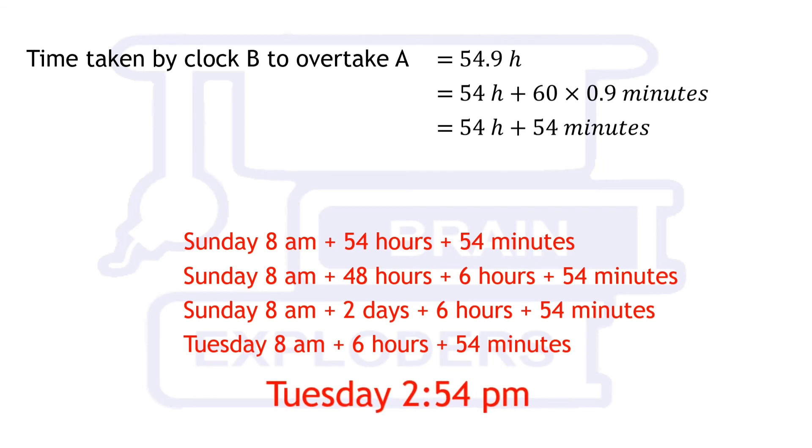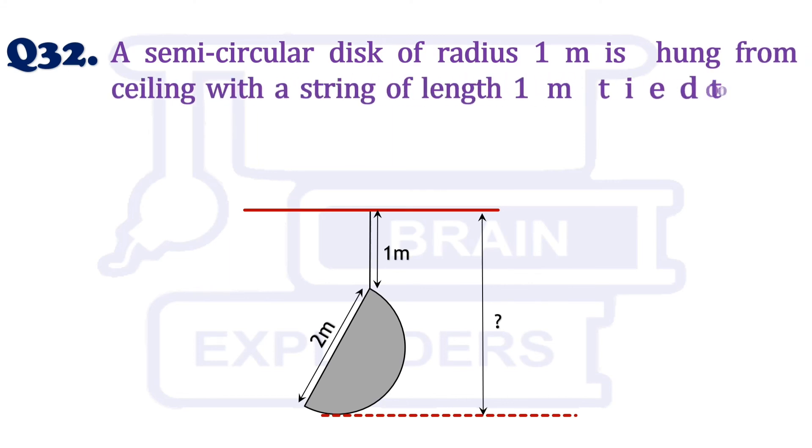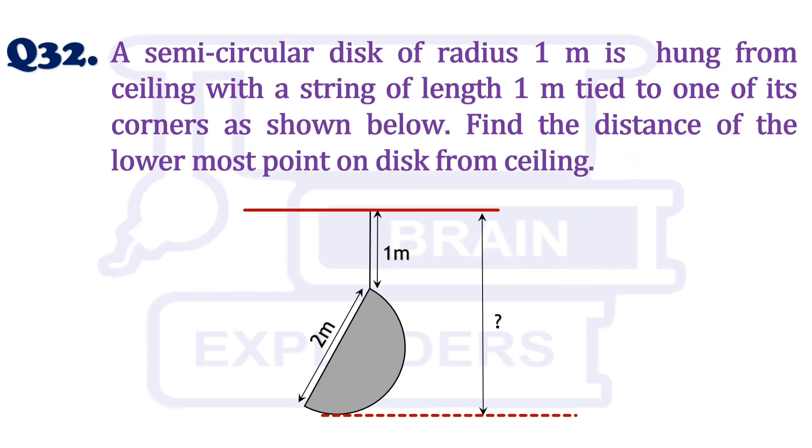Let's move to our next question. A semi-circular disk of radius 1 meter is hung from the ceiling with a string of length 1 meter tied to one of its corners as shown below. Find the distance of the lowermost point on the disk from the ceiling.